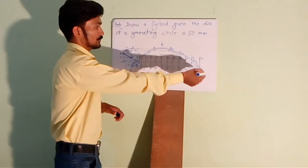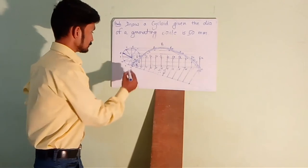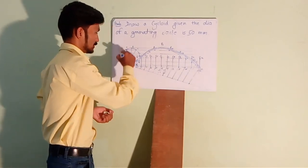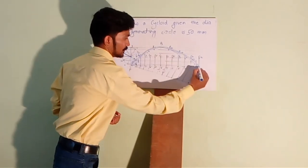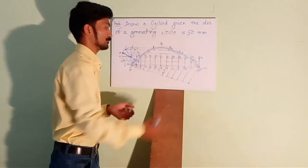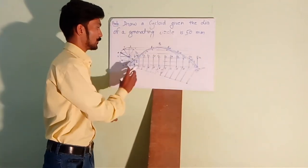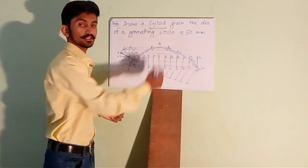So, the curve is the locus of point P as the point travels along the line, it will go to here. Okay, so this is the locus of the point P, which is nothing but the cycloid.